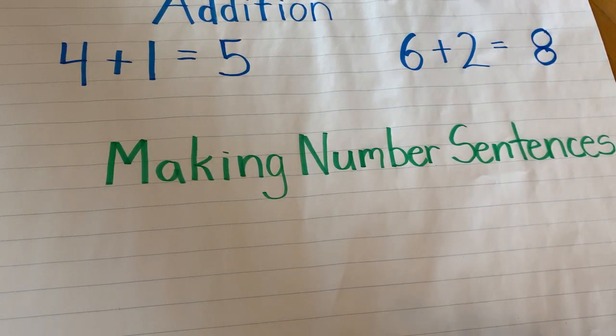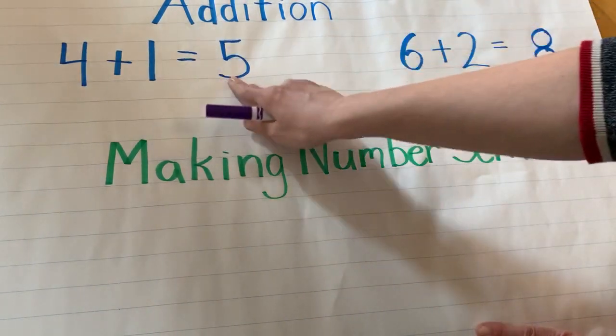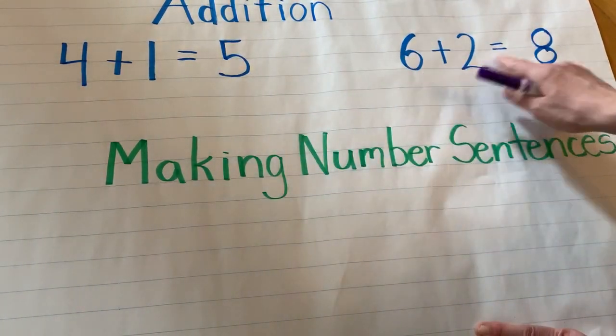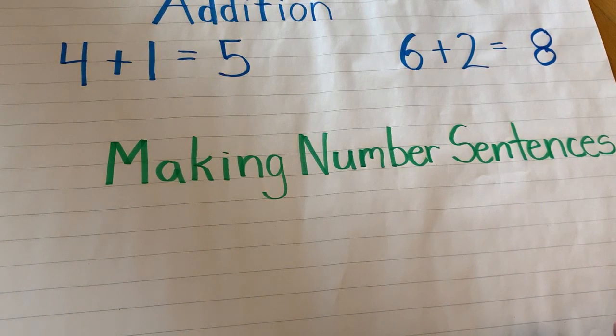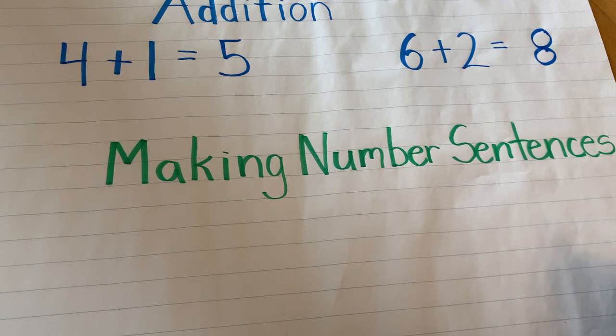The other day we talked about how we can show 4 plus 1 equals 5 and 6 plus 2 equals 8 using counters. But what if you don't have counters? And what if I ask you to use pictures? Let's see.